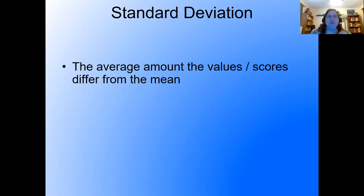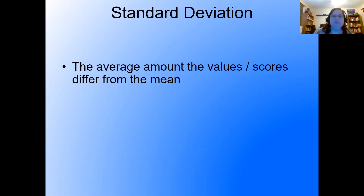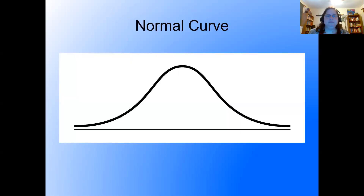First, I want to recall standard deviation. Standard deviation is the average amount that values or scores differ from the mean. We spent some time talking through standard deviation and how you calculate it. Now I want to take the standard deviation and the normal curve and put them together. The normal curve is bell-shaped, unimodal, and symmetrical.